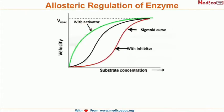Let's look at what kind of graph we get in terms of Allosteric Regulation. Allosteric regulation can be with activator, with inhibitor, or without activator or inhibitor. Without activator or inhibitor, we get a sigmoid curve. With an inhibitor, there will be a flattening of the sigmoid curve, and with an activator, the sigmoid curve may turn more towards a hyperbolic curve.